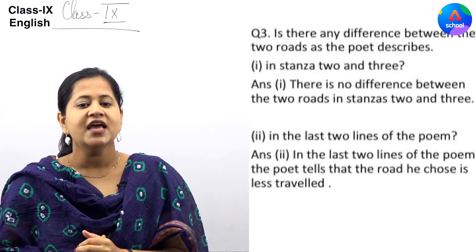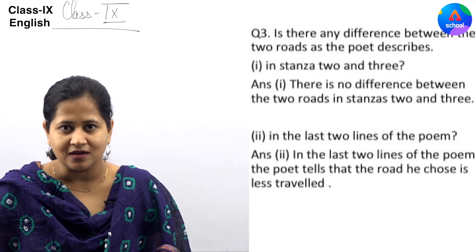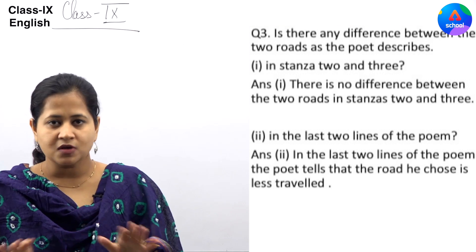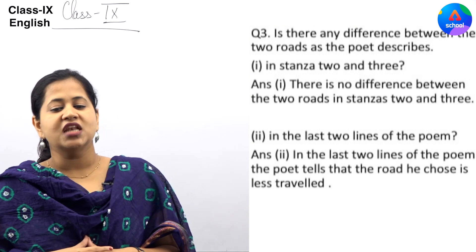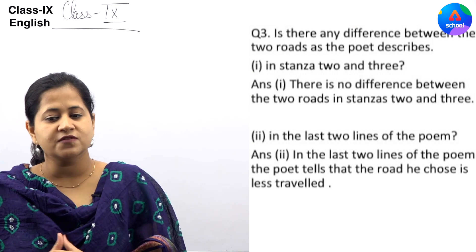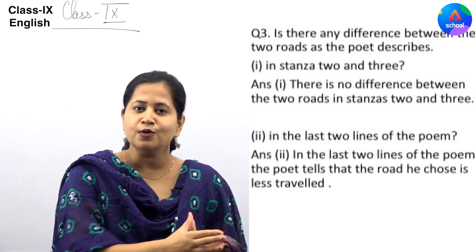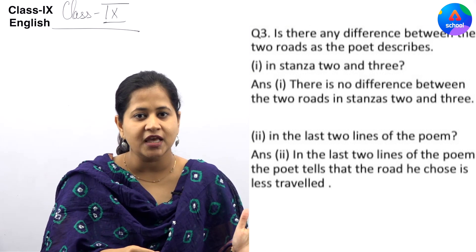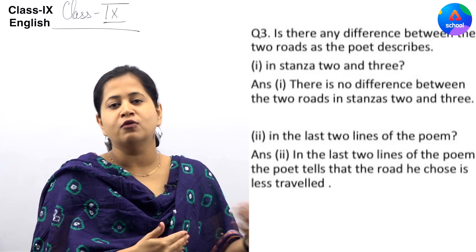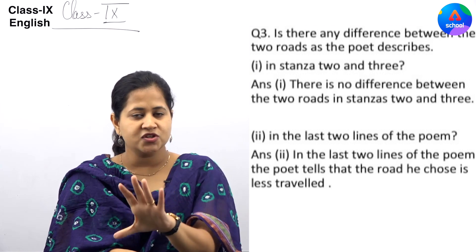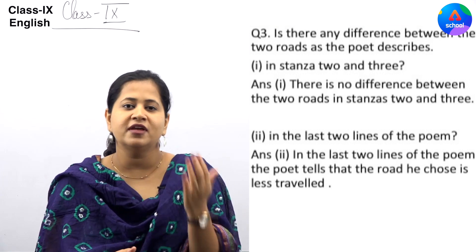In the last two lines of the poem, the poet tells that the road he chose is less traveled. It means that fewer people travel on that road.